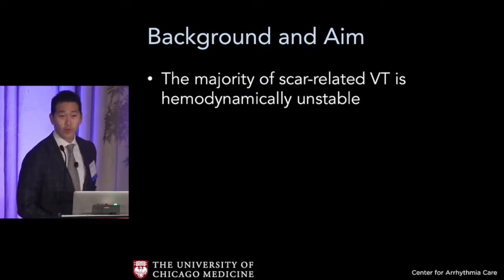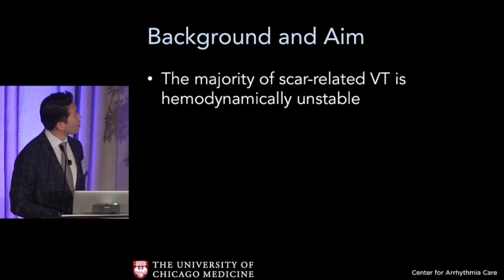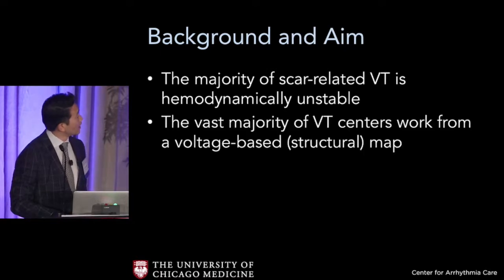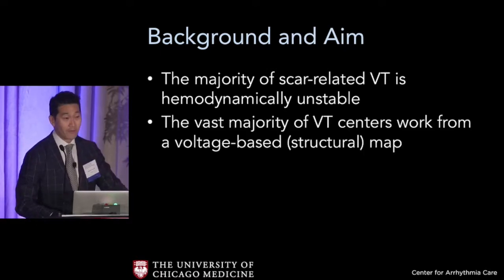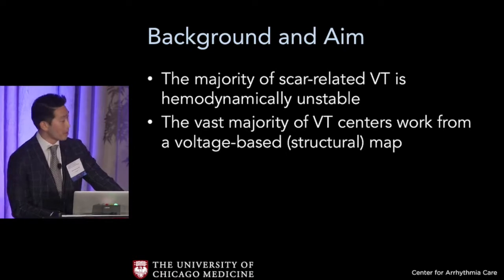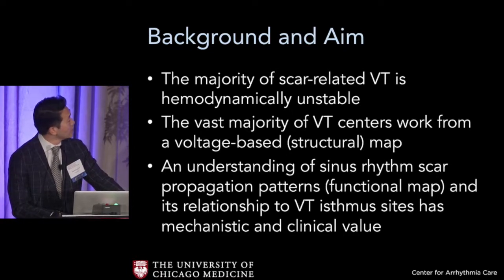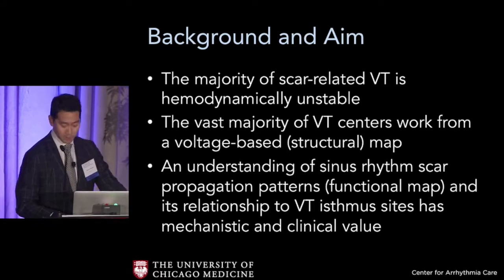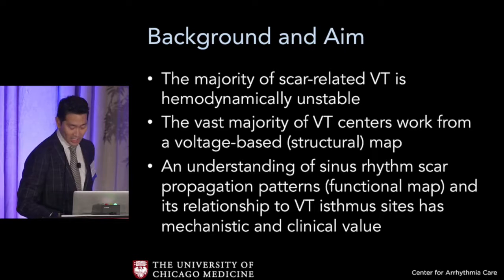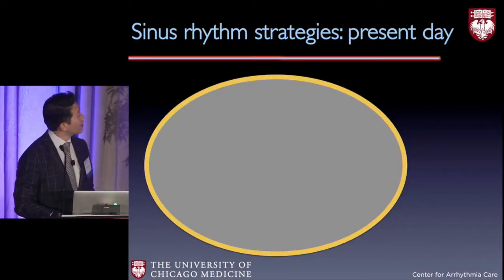The majority of ventricular tachycardia is hemodynamically untolerated, and the vast majority of centers work off of a structural scar-based map. We've heard about the limitations of voltage. An understanding of the sinus rhythm scar propagation pattern — which is a functional map — in its relationship to isthmus sites is mechanistically and clinically valuable.